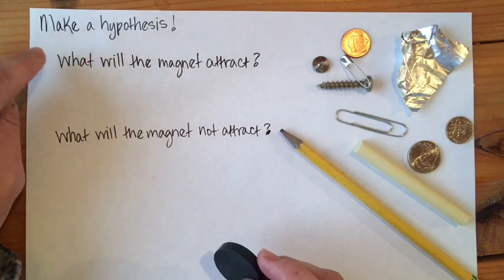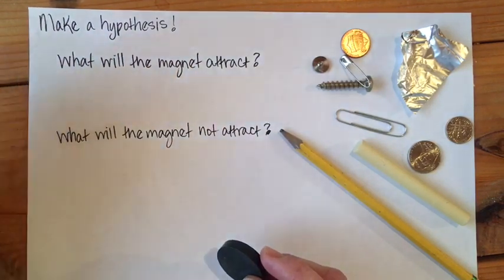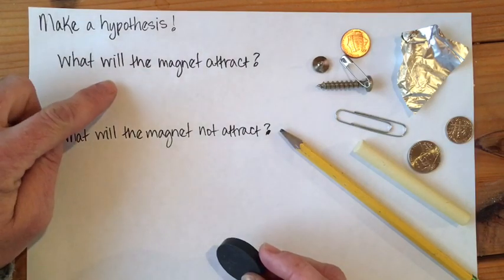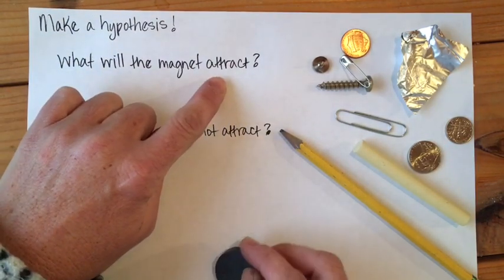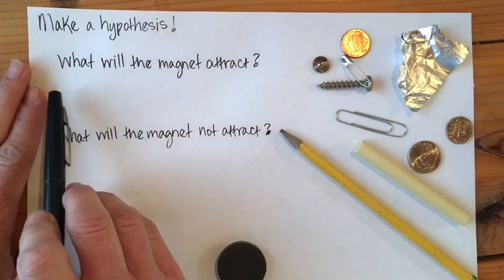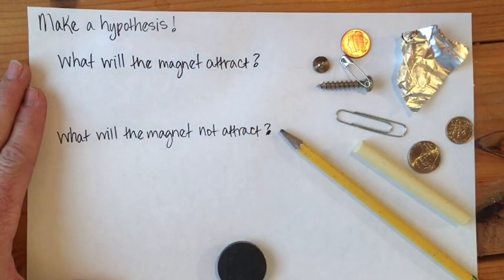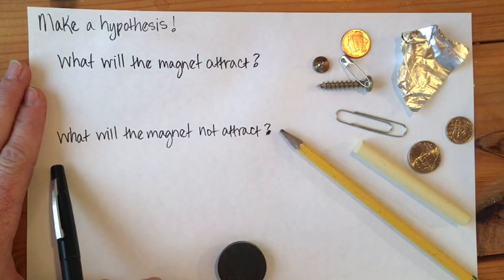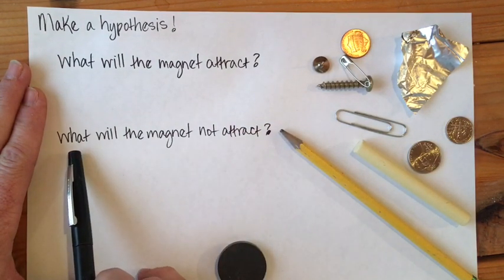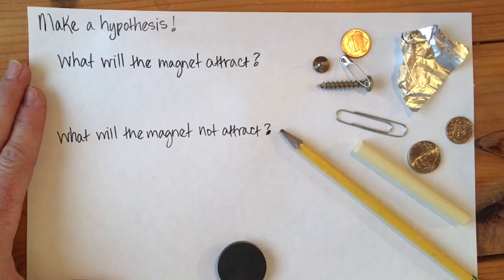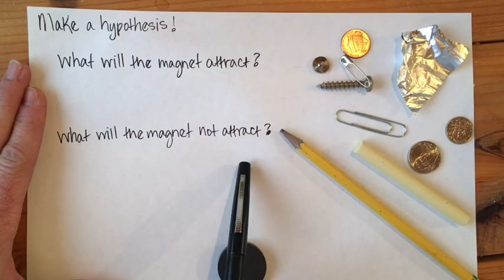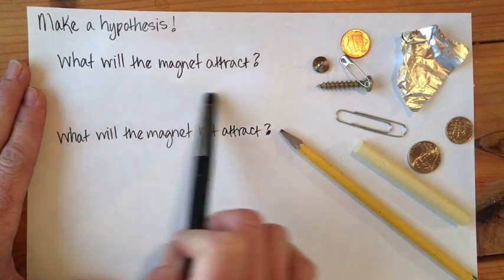So we're going to be a scientist and we're going to make a hypothesis. We're going to write two questions. We're going to make a guess: what will the magnet attract? And I want you with a pen or pencil to write down some things you think, before you try the experiment, that will be attracted to the magnet. And then what you think the magnet will not be attracted to. So we're going to write those things down. Go ahead and do that right now, and you can pause the video.